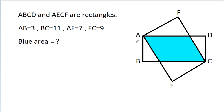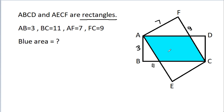In this video, we have given that ABCD and AECF are rectangles, and AB is 3, BC is 11, AF is 7, and FC is 9. We have to find this blue area.